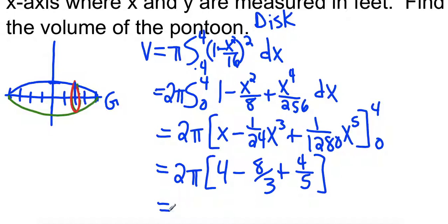So we have 4 minus 8/3rds plus 4/5ths, which is going to be 2 pi times, you can get common denominators, it works out to be 32/15ths.